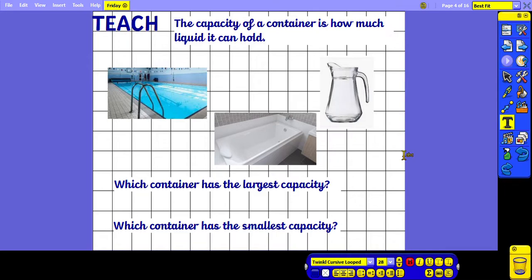For the largest capacity, we need to find the container that holds the most liquid, and that is in this case the swimming pool. To find the smallest capacity, we need to look for the container that holds the least amount of liquid. So between the bath and the jug, that would be the jug.